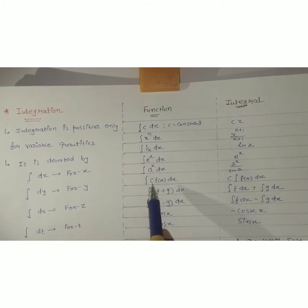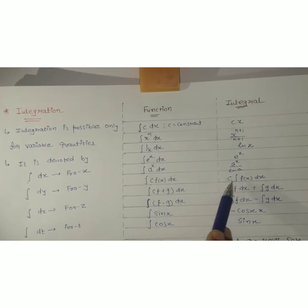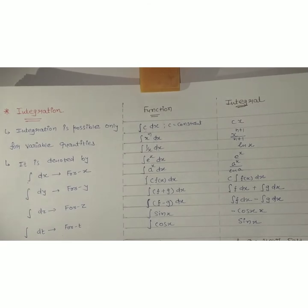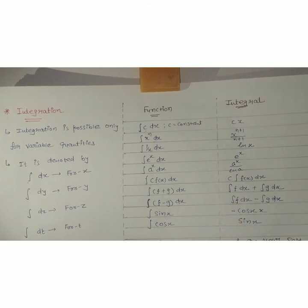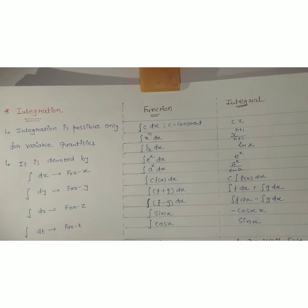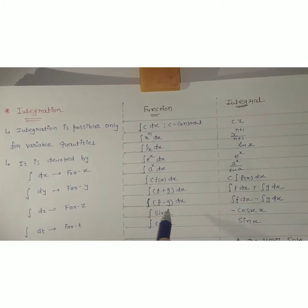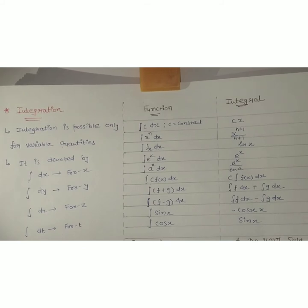If you have c·f(x)dx, since c is a constant it goes outside — giving c times integral of f(x)dx. We learned in differentiation too that constants cannot be differentiated, so we take them outside and only integrate the variable part. For integral of (f + z)dx: integrate first term plus integrate second term. For integral of (f − z)dx: integrate first term minus integrate second term. Also: integral of sin x is minus cos x, and integral of cos x is sin x.